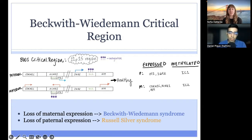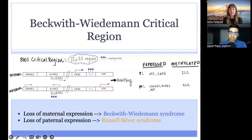In general, we can consider that loss of maternal gene expression can result in Beckwith-Wiedemann syndrome, and loss of paternal gene expression may result in Russell-Silver syndrome. This makes sense if we remember that the maternal allele suppresses growth, so loss of this function results in an overgrowth condition. Similarly, the paternal allele promotes growth, so loss of this function results in an undergrowth condition.